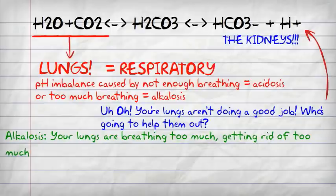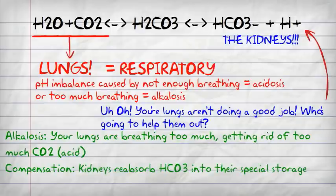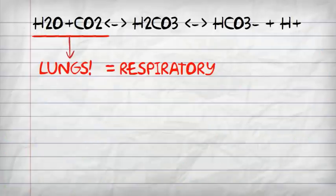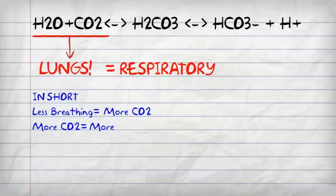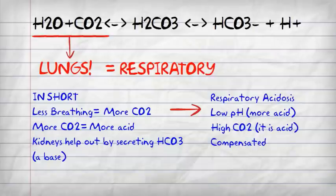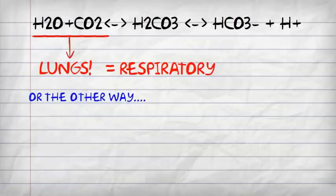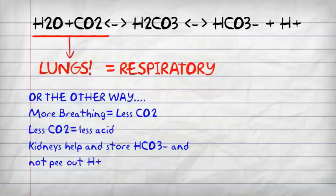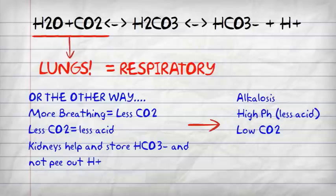In alkalosis, your lungs are breathing too much and getting rid of too much CO2 or acid, and the kidneys will compensate by reabsorbing bicarbonate and not secreting the hydrogen. In short: less breathing is more CO2, which is more acid — respiratory acidosis. A low pH means more acid and high CO2, compensated with high bicarbonate. The other way around: more breathing, less CO2, less acid — the kidneys store their base and don't excrete the acid. This is alkalosis — a high pH with low CO2, compensated by low bicarbonate.